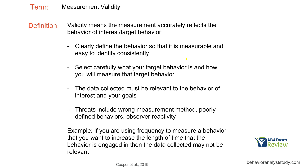Validity means the measurement accurately reflects the behavior of interest or the target behavior. Whatever measurement you have, it's reflecting the behavior of interest — and here's that word accuracy. Additionally, it's relevant to your goals. So not only are we measuring what we intend to measure, but the data we are collecting is actually relevant for our goals so we can be effective and socially valid. So how do we become valid? We clearly define the behavior so that it is measurable and easy to identify consistently.